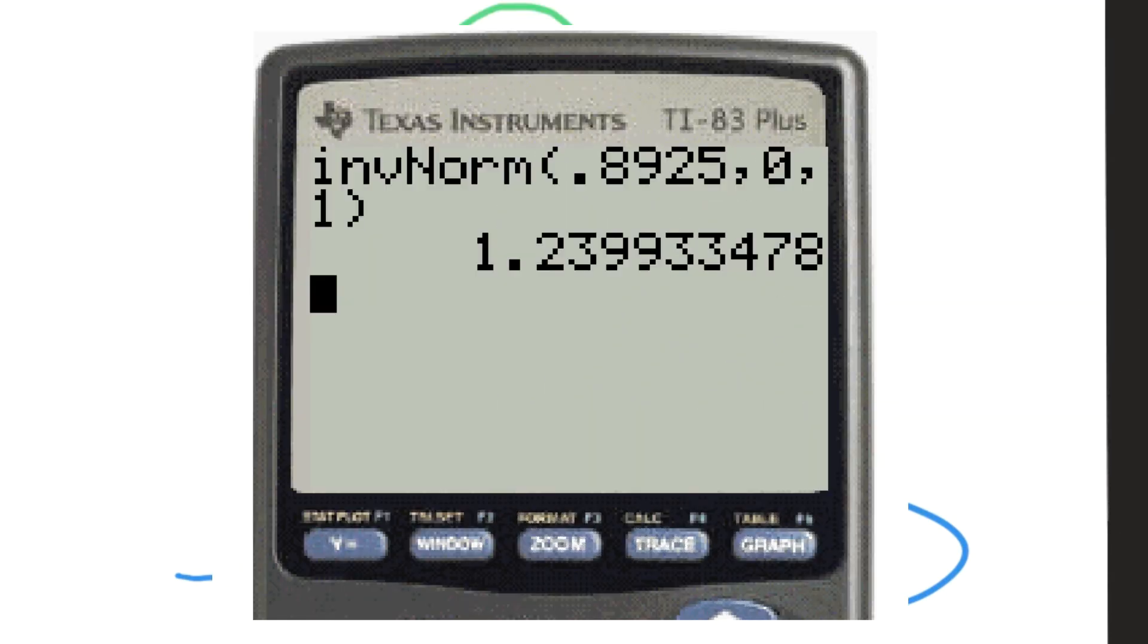We do inverse norm again. The first number is the cumulative area up to your z-value, so we use 0.8925, and then the mean and standard deviation of 0 and 1. That gives us 1.2399, which when rounded is 1.24.